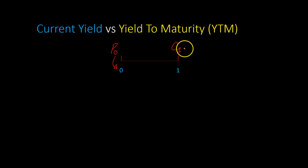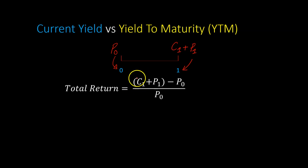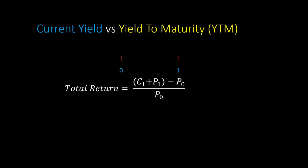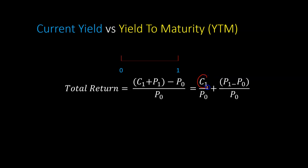The other thing that you can get from holding on to this bond is the price that you can sell it for at time period one — call that P1. If somebody asks you what is the total return from holding on to this bond for one year, you can say: in one year's time I'm going to receive some coupon payments plus the price at which I can sell it, subtract my initial investment P0, as a fraction of the price I paid today. This can be written further as C1 over P0 — your coupon payments as a fraction of the price you paid today — plus the change in price as a fraction of the price you paid today. This is the total return.